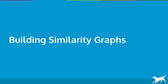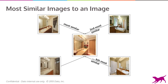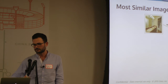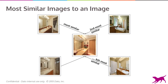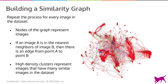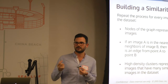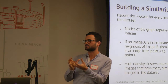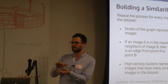One more thing before switching to the demo. If we find similar images for one query image — say a toilet — using deep features, we get the first most similar image, second most similar, and so on. If we do this for every image in the dataset, we end up with a similarity graph: a node is a picture and an edge between two nodes means those two pictures are similar. A cluster of nodes indicates a density of images that look quite similar, and we can use this to our advantage.